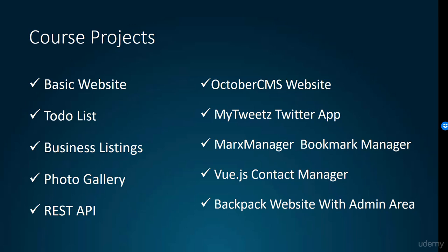We're using Laravel 5.4 in this course. Next we'll create a simple to-do list to show you how to create CRUD functionality — Create, Read, Update, and Delete. Then we'll move on to creating a business listings application, and this is going to include authentication. We're going to make it so that users can log in, create their own business listings, and edit their own listings. Then we'll move on to creating a photo gallery where users can create albums and upload images to those albums.